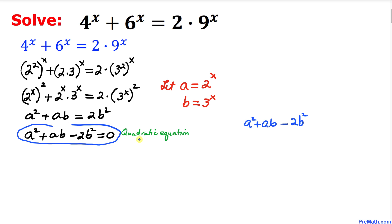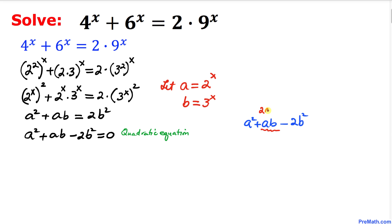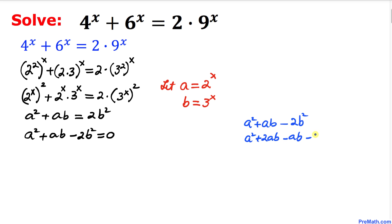Let me show an easy way to factor a^2 + ab - 2b^2. The middle term ab can be rewritten as 2ab - ab, which doesn't change the value. So the expression becomes a^2 + 2ab - 2ab - 2b^2.